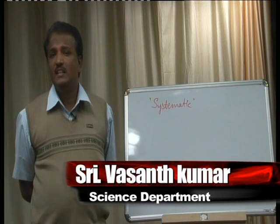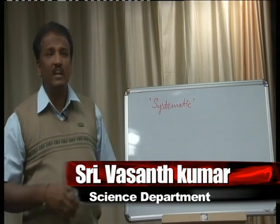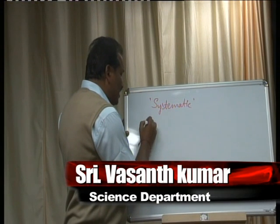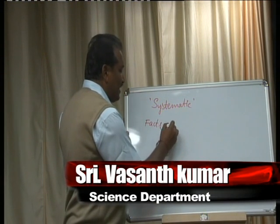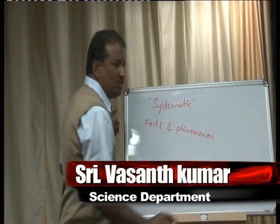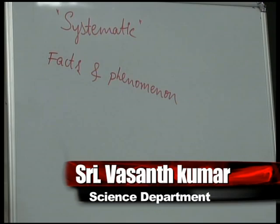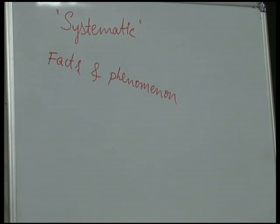Systematic study means you have to study natural phenomena. For example: why do stars twinkle during the night? Why is the color of the sea blue? Why is the sky blue? Why does the sky appear different colors at sunrise and sunset? How do plants grow? Why is the color of a leaf green? These are all natural concepts. To know the why, what, and when about these concepts, you study them systematically — and that is science. Science can be defined as the systematic study of facts and phenomena observed in nature.